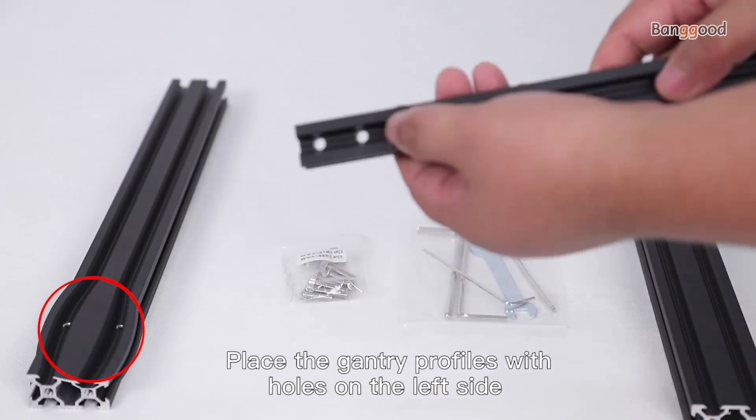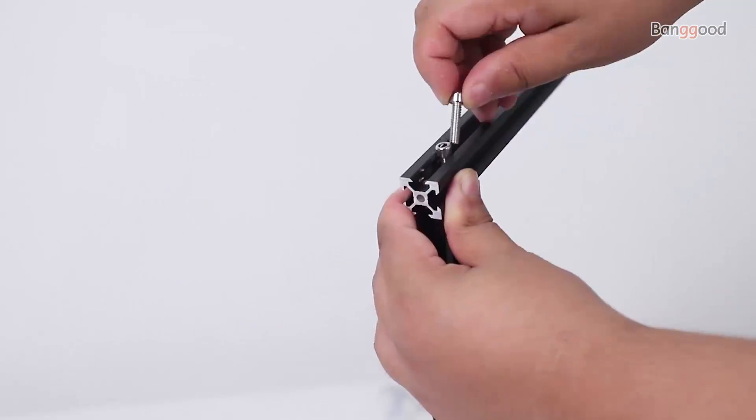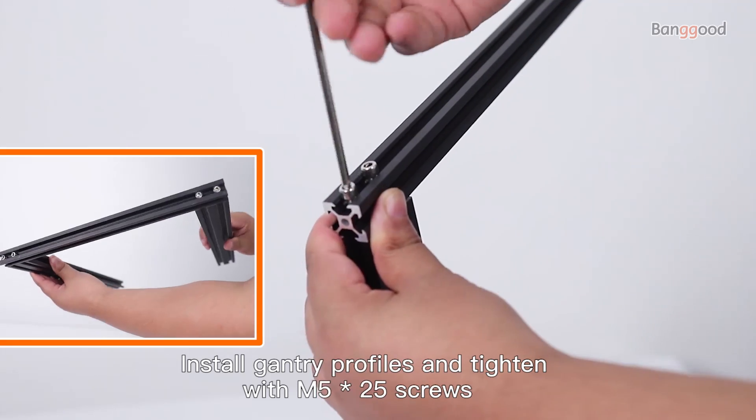Place the gantry profile which holds on the left side. Install the gantry profile and tighten with M525 screws.